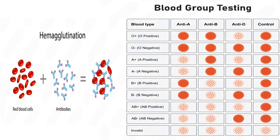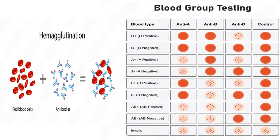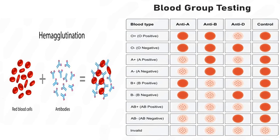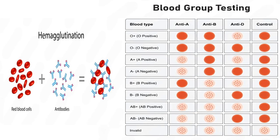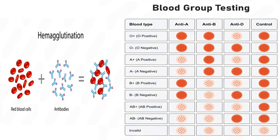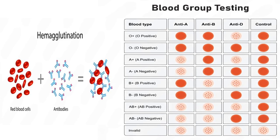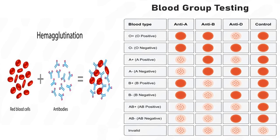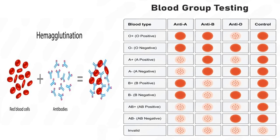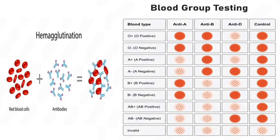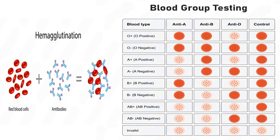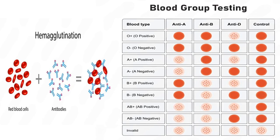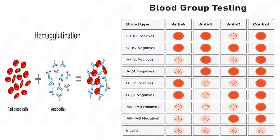Number 5. How are blood groups determined? Blood groups are determined by testing a blood sample for the presence of specific antigens on the surface of red blood cells. The blood is mixed with anti-A, anti-B, and anti-RH antibodies. Clumping, or agglutination, in response to these antibodies indicates the presence of the corresponding antigens, identifying the blood type within the ABO and RH systems.